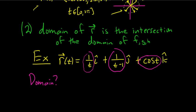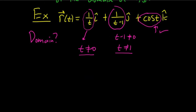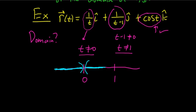The word 'and' leads to intersection. For the first term to make sense, the denominator can't be 0, so t ≠ 0. For the second term, t − 1 ≠ 0, so t ≠ 1. The cosine function is defined everywhere, so the only restrictions are t ≠ 0 and t ≠ 1. To find the domain, plot the numbers to throw away — 0 and 1 — then shade the rest.